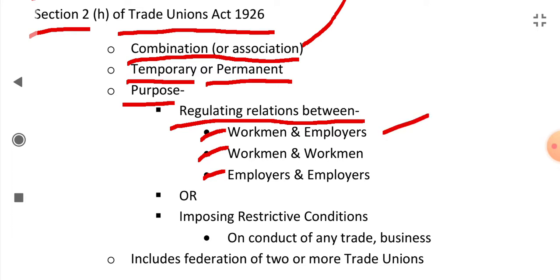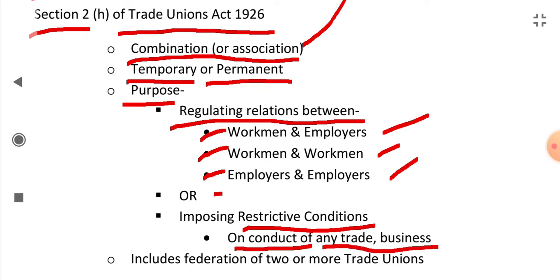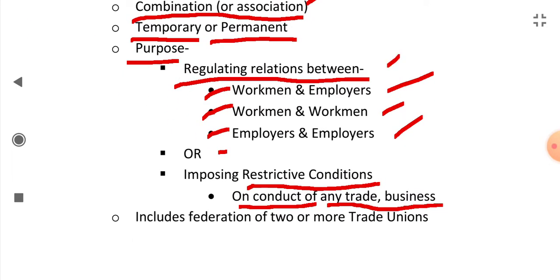The trade union regulates relations between workers and the owners of the industry, between workers themselves, and between employers themselves. Another purpose of trade union is to impose restrictive conditions on the conduct of any trade or business. These were the two purposes. Any federation of two or more trade unions will also be included within trade unions — the federation itself will be called a trade union.